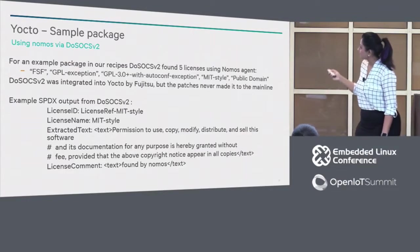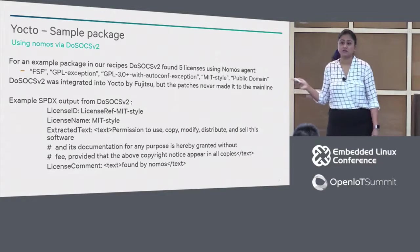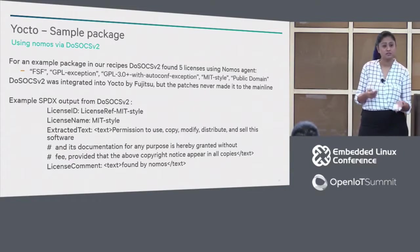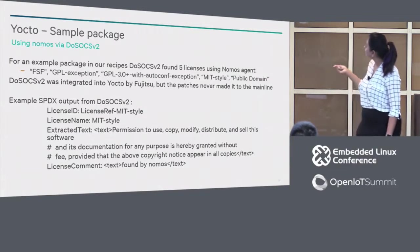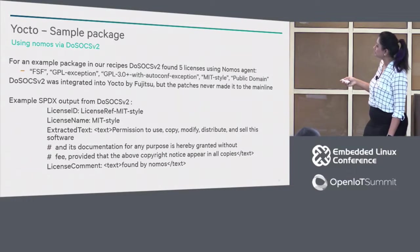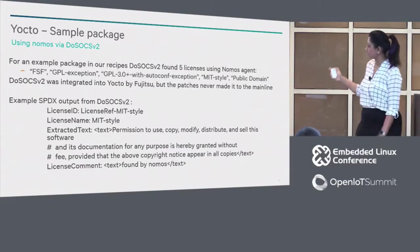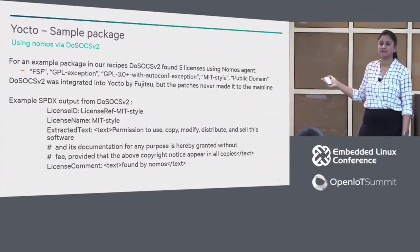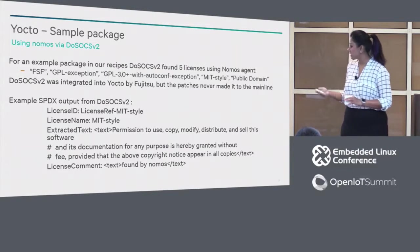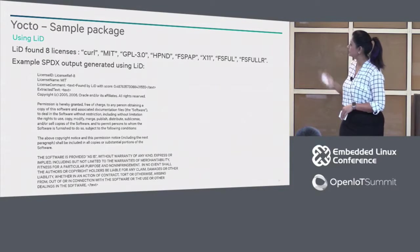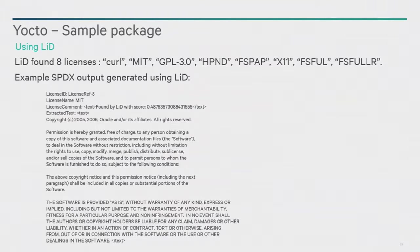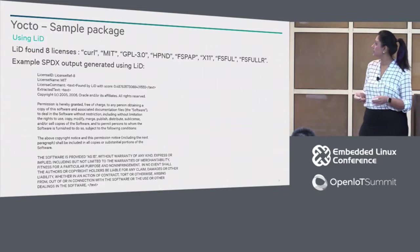A quick example: we took an example package and used DosOx V2 to generate SPDX using its underlying default agent, which is Nomos at this point. It found five licenses. One thing you see because it uses Nomos is it does not spit out your entire license text — that's the nature of Nomos. But if you see the same package using LID, the license text is complete. You can use that directly to attach to a product distribution. LID also caught additional licenses on top of what Nomos did in the same DosOx V2 integration.